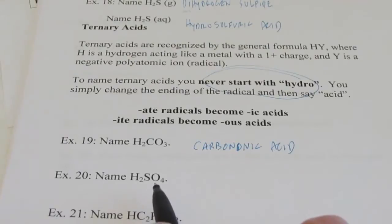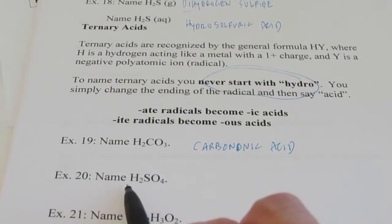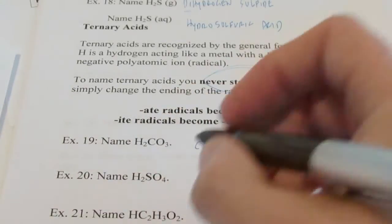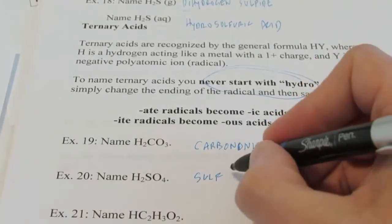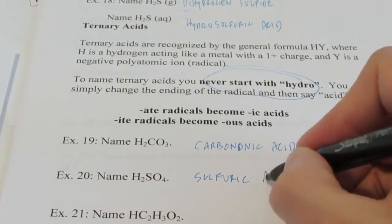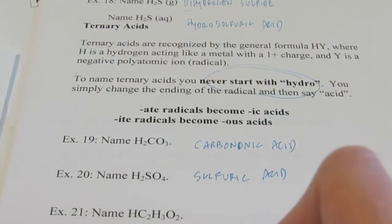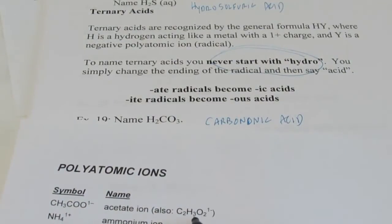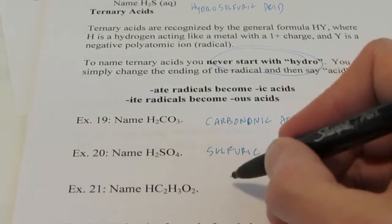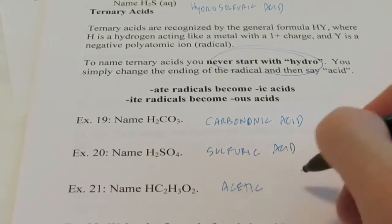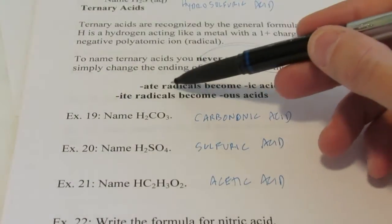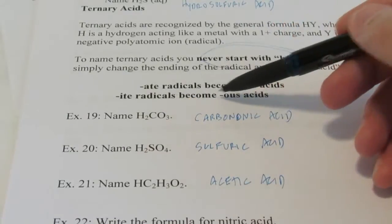What about H₂SO₄? I recognize it as a ternary acid — it starts with H and it's attached to a polyatomic. The polyatomic SO₄ is sulfate. We change the ending from -ate to -ic, so that becomes sulfuric — we're going to say sulfuric, not sulfic — acid. What about HC₂H₃O₂? C₂H₃O₂ is acetate. So that acid would be called acetic acid. Remember: -ate radicals become -ic acids.